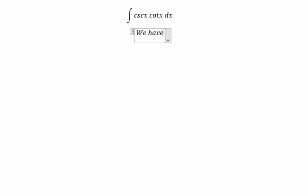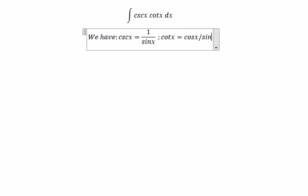We have cosecant of x equal to 1 over sine x. Cotangent x equal to cosine x over sine x.